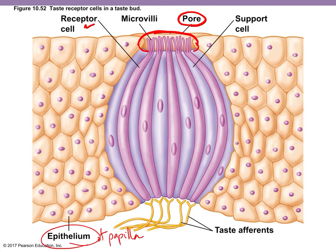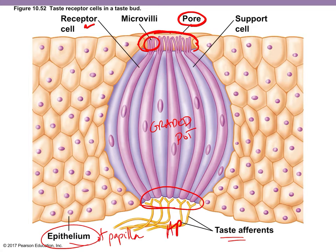For signal transduction in taste: chemoreceptors on the taste bud microvilli bind chemicals and cause calcium levels to rise through ligand-gated or ion-gated channels. This causes a graded potential leading to an action potential in the afferent neurons.